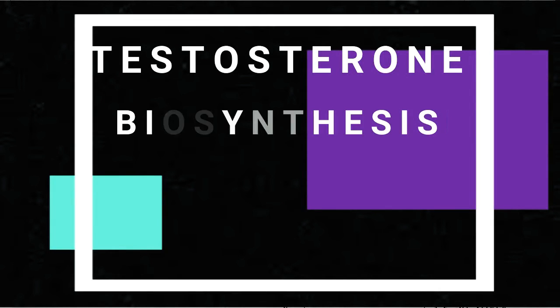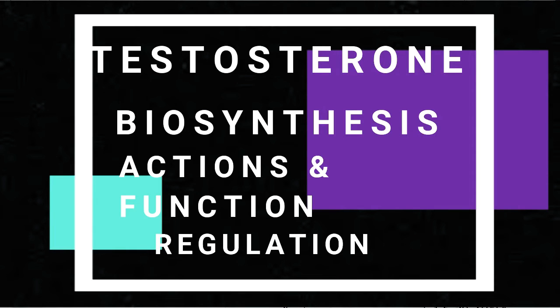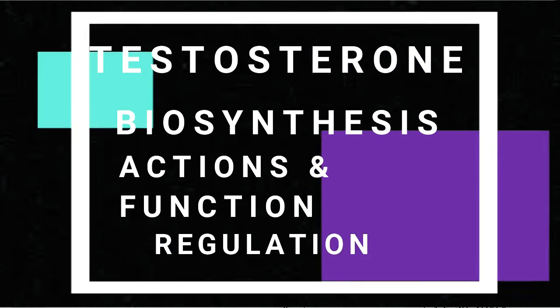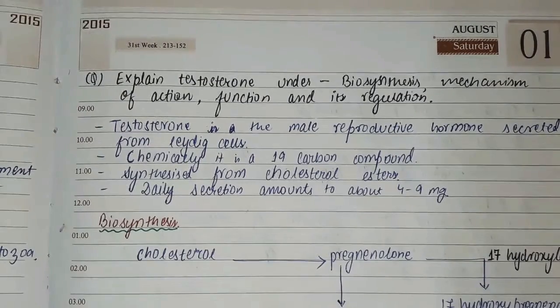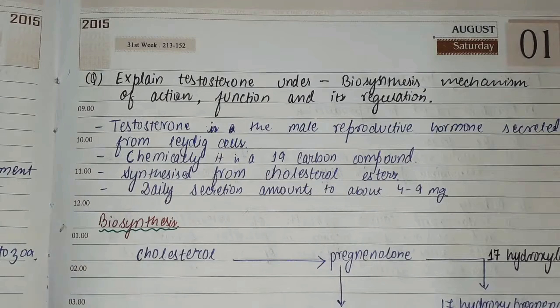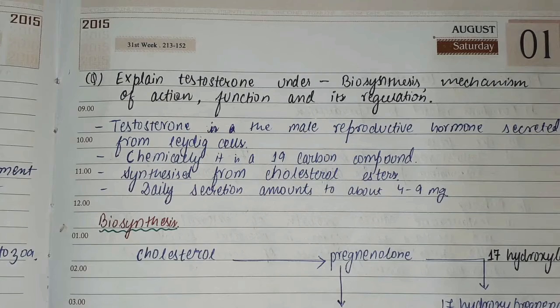Today's topic of discussion is the male hormone testosterone. We will discuss this under biosynthesis, mechanism of action, functions, and regulation, and also some clinical and applied parts. In exams, this part is often asked as a long answer question covering biosynthesis, mechanism of action, function, and regulation — usually divided into 4+4+3+1 marks, or under 12 or 15 marks.